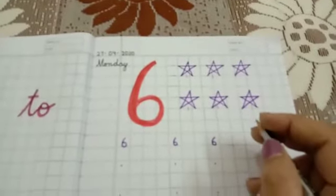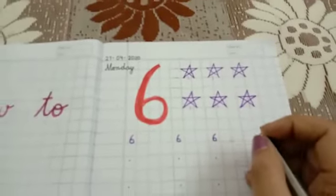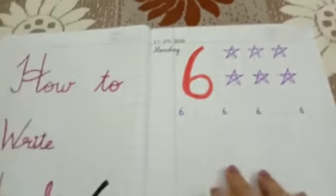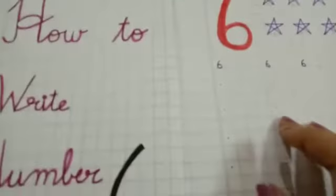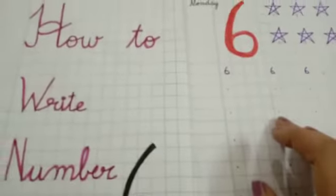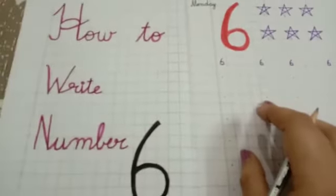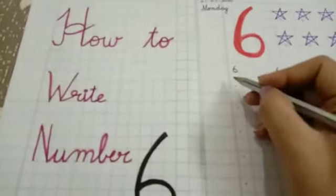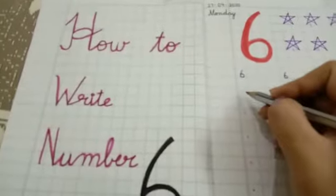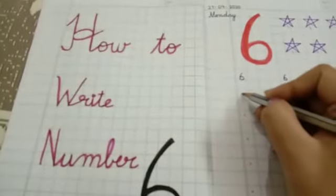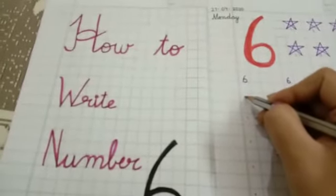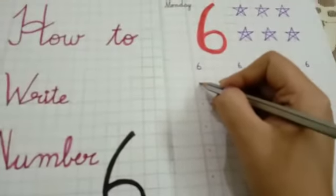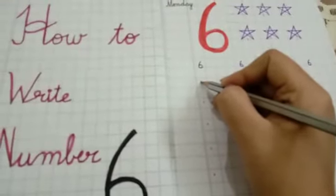Let's count: one, two, three, four, five, six. Yes, very good! How many stars? Six stars. Yes, very good! Now I'll tell you how to write number six.